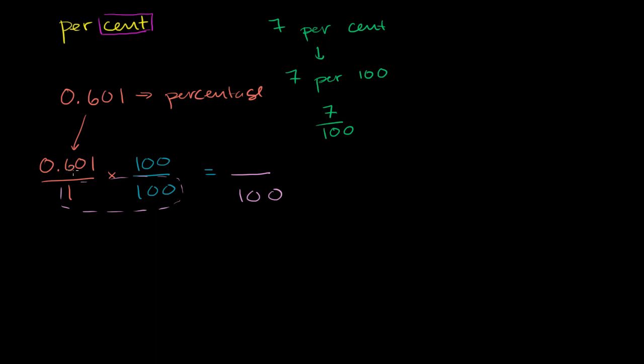If I multiply 0.601 times 100, what am I going to get? Well, every time I multiply it by a multiple of 10, or every time I multiply it by 10, I'm going to shift the decimal over to the right once. So if I multiply it by 10, I'd get 6.01.